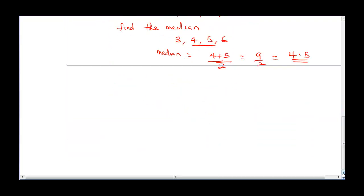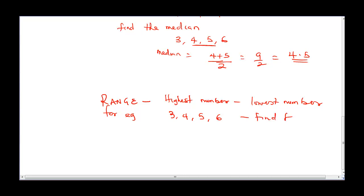Let's go to the final one. And that's range. Range is defined as the highest number minus the lowest number. For instance, for example, if you're given 3, 4, 5, 6, and you're asked to find the range. What's our highest number here? We have 6 minus the lowest number, which is 3. So our range is 3.